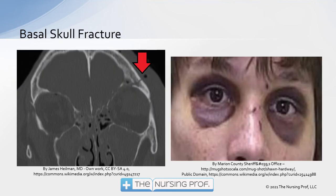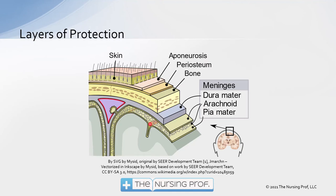Another subset of skull fractures is a basal skull fracture. The picture on the right shows the raccoon eyes that can occur from a basal skull fracture. This is the base of the skull, which holds the bottom of the brain in place. If we have a basal skull fracture, we have to be careful that the patient is not developing edema, because the base of the skull is where we have the brain stem. If swelling or bleeding starts to impinge on the brain stem, the patient is going to stop breathing and stop having a heart rate. We do have several layers of protection for the brain: the skin, underlying adipose tissue, the skull bone, the dura mater — a very thick and tough outer covering — then the arachnoid membrane, and finally the pia mater.